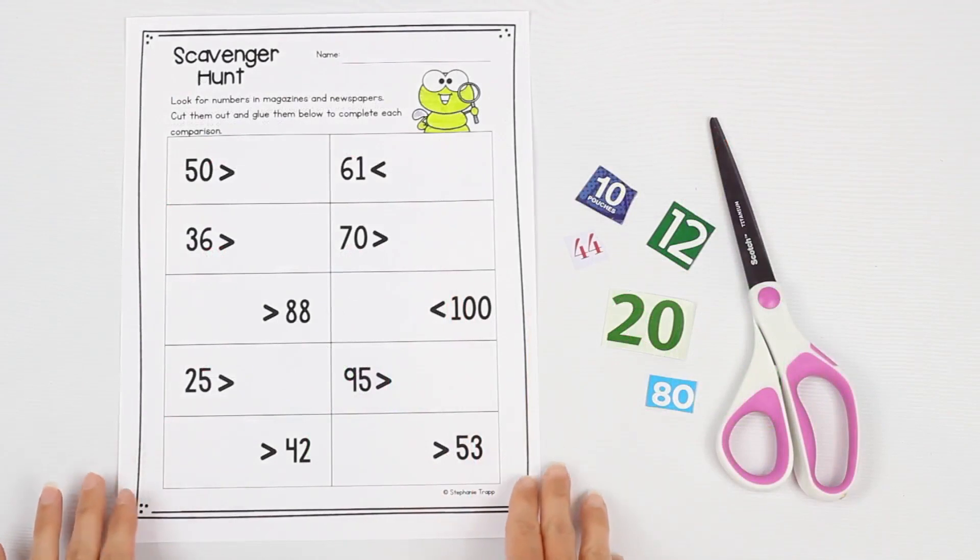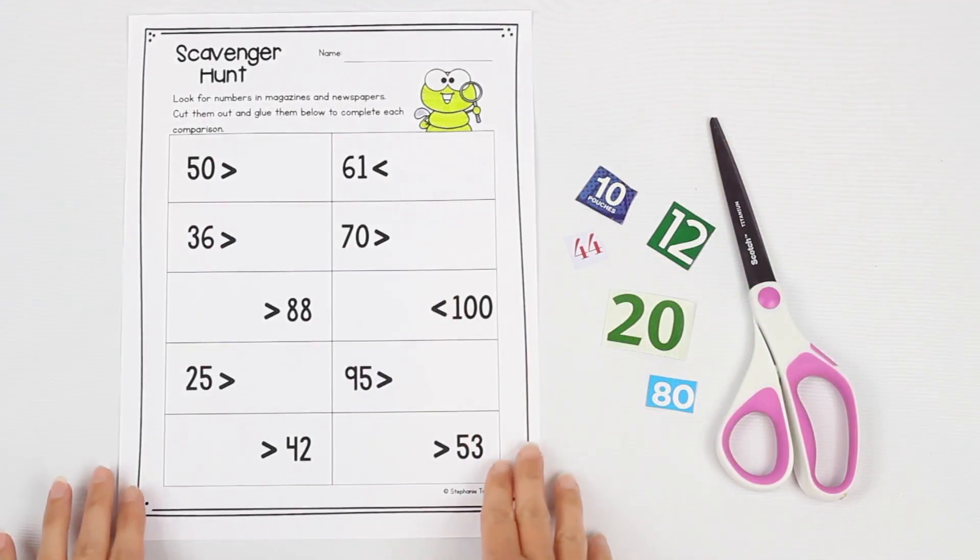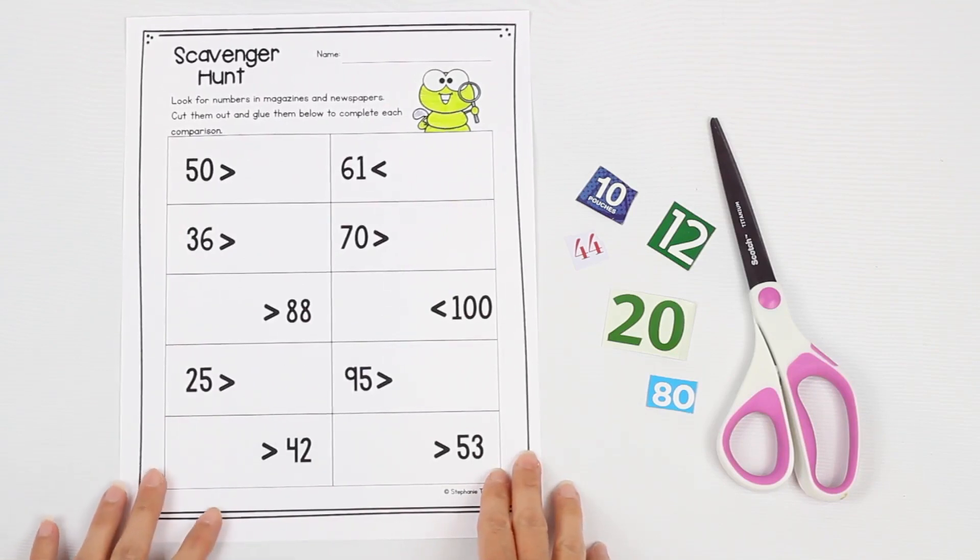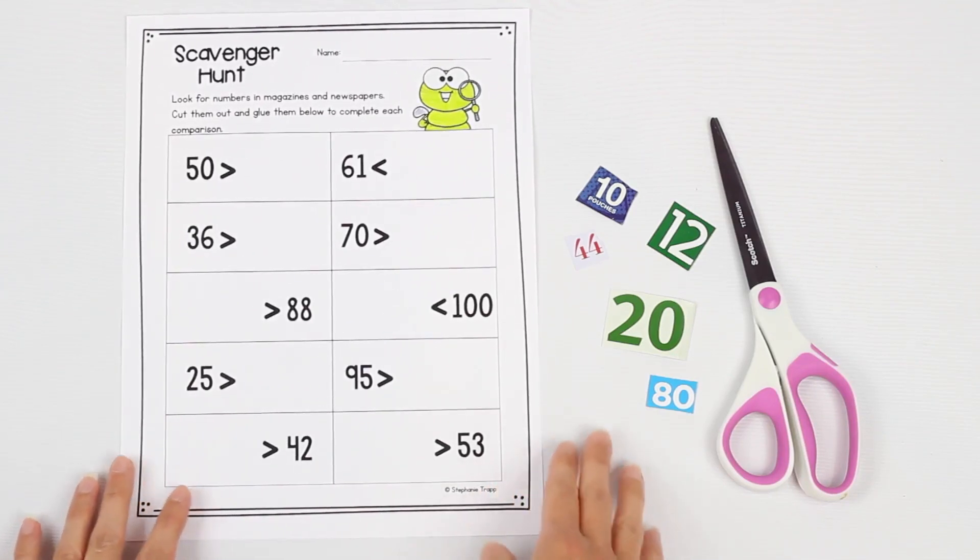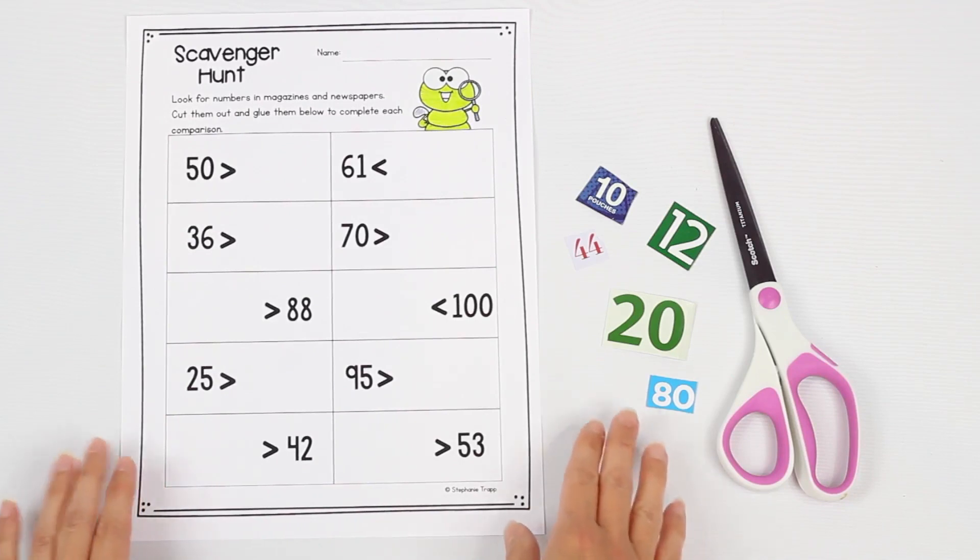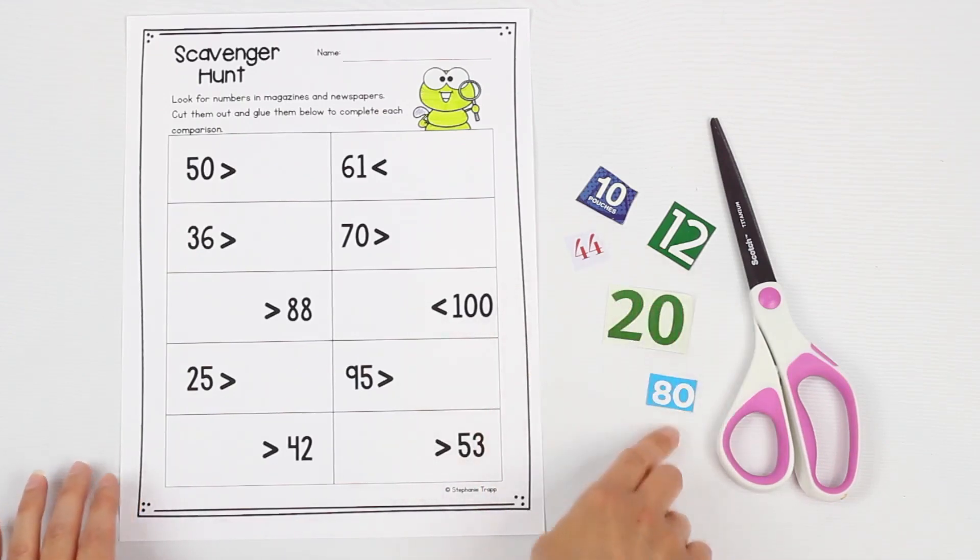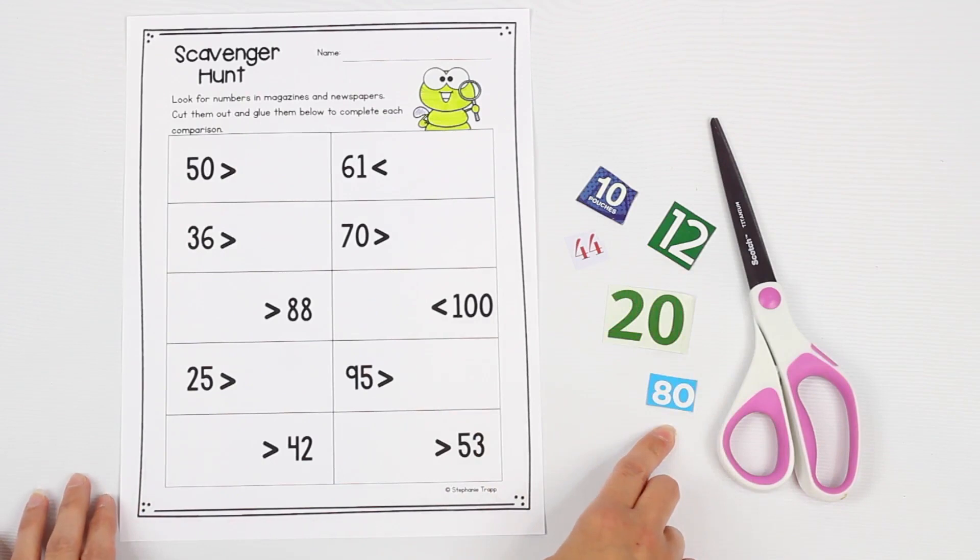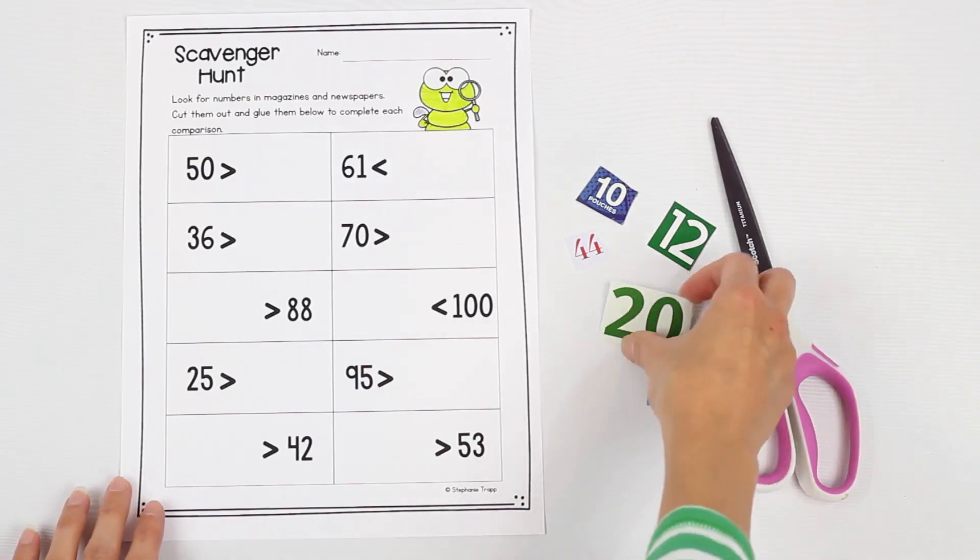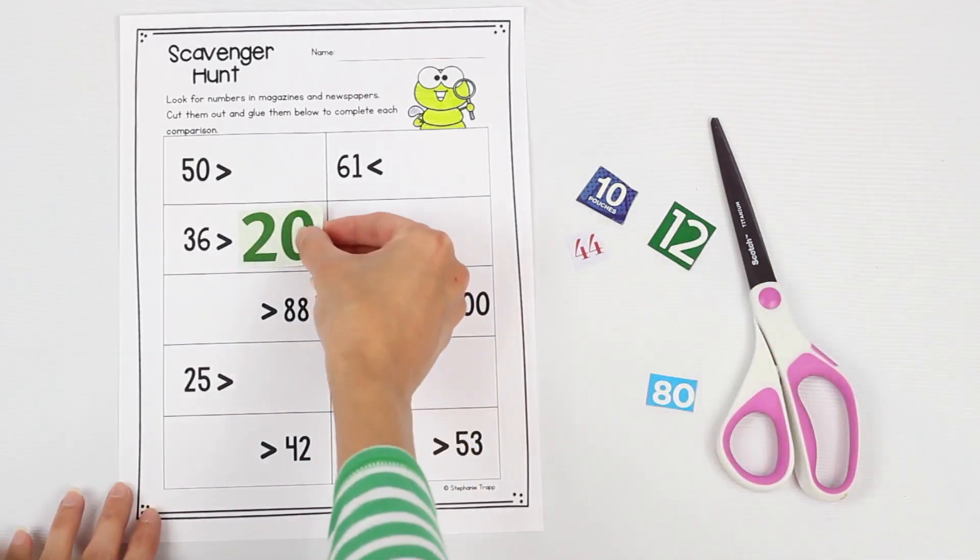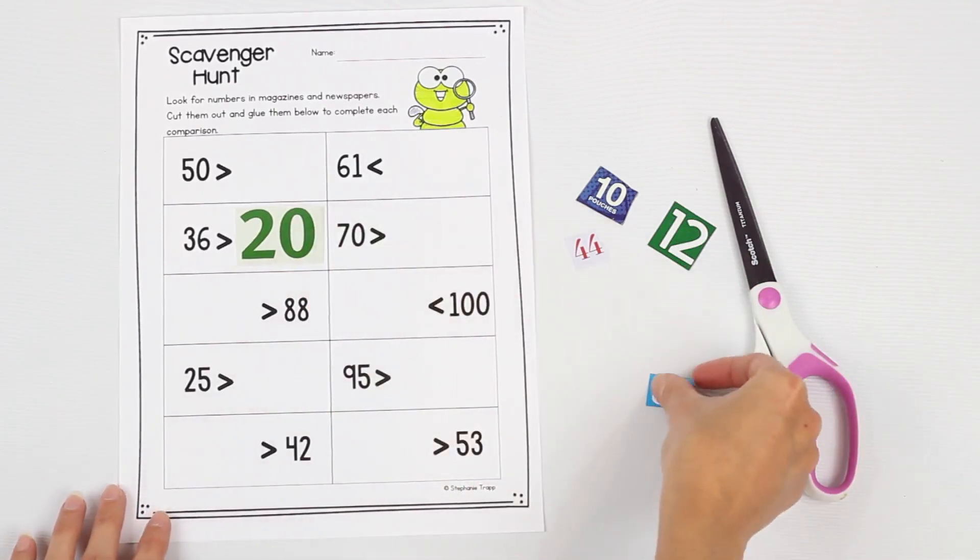A number scavenger hunt is a fun activity to use as a math center or maybe to send home for your students to complete. But students look through magazines or newspapers for numbers. A great place to find them are in the sales ads that come in the newspaper or even in the recycling bin. These numbers right here I cut off of food boxes in our recycling bin. But then they simply use the numbers that they find on their scavenger hunt to complete the inequalities.